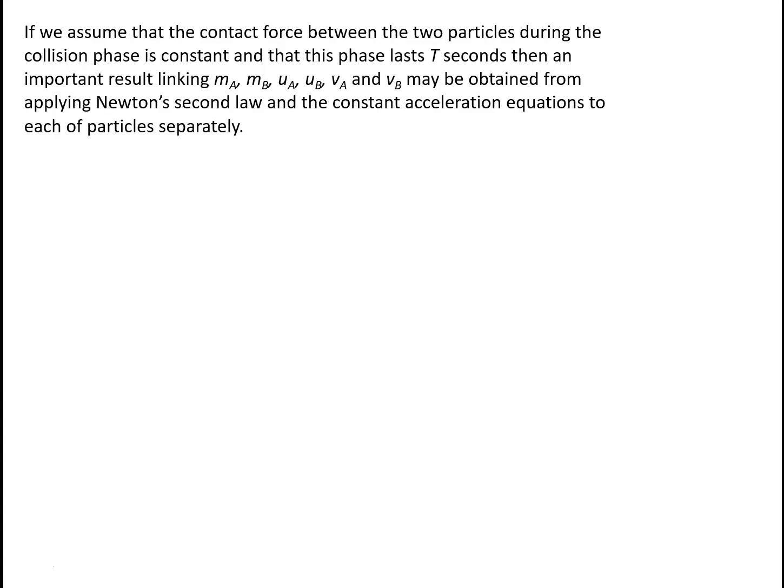Now, if we assume that the contact force between the two particles during a collision phase is constant and that this phase lasts for time t seconds, then we can obtain an important result linking the masses and the initial and final velocities of A and B by applying Newton's second law and the constant acceleration equations to each of the particles separately.